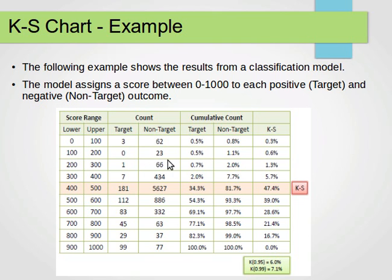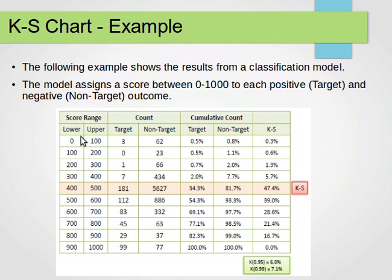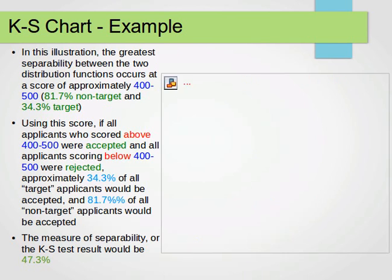What we do is compute cumulative counts for both target and non-target, and then plot them — both the target and non-target — against the score range. Looking at this plot, we have the score range as the x-axis and the cumulative count percentage as the y-axis.